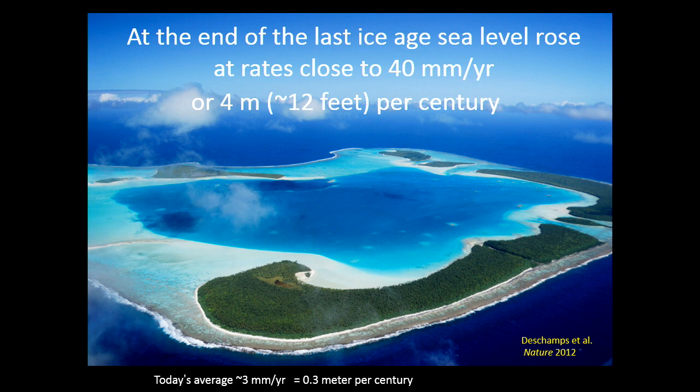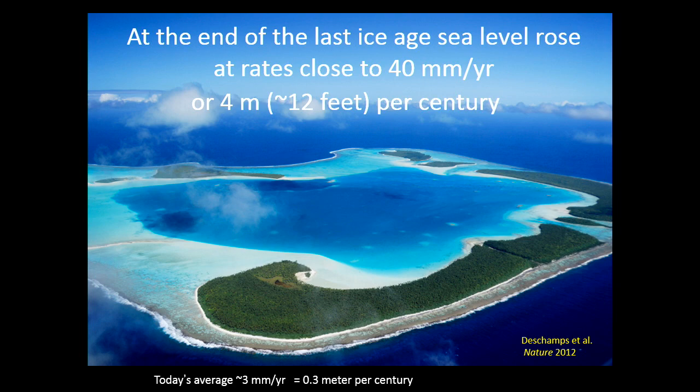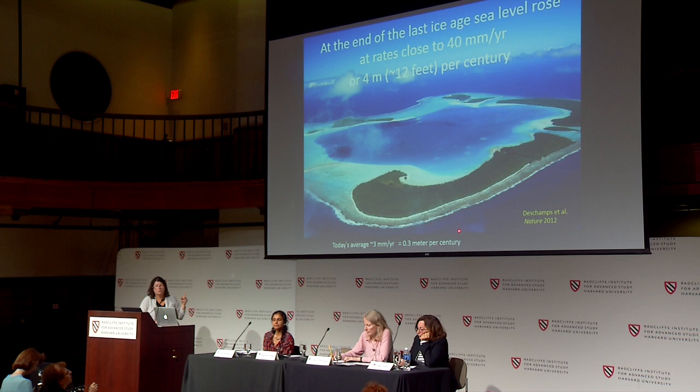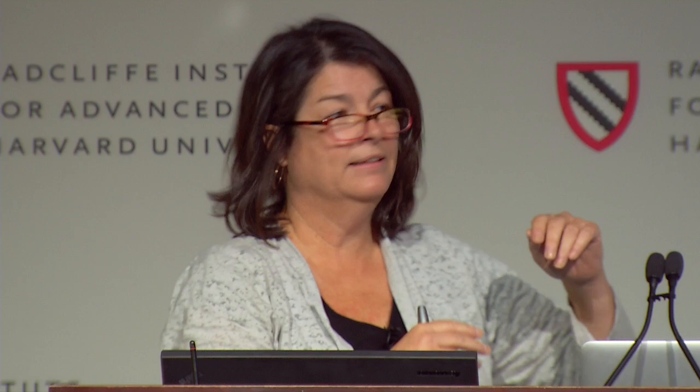Scientists went offshore to Tahiti in the Western Pacific and drilled down to find fossilized coral. With very precise dating, they determined the depth below sea level of the coral as it tracked sea level rise at the end of the last ice age — when the ice sheets were melting quickly, the seas were rising, and the coral was keeping up. They found that sea level was rising at rates of 40 millimeters per year, or 12 feet per century. Right now, sea level is rising at 3 millimeters per year.